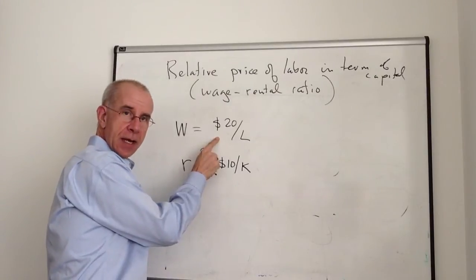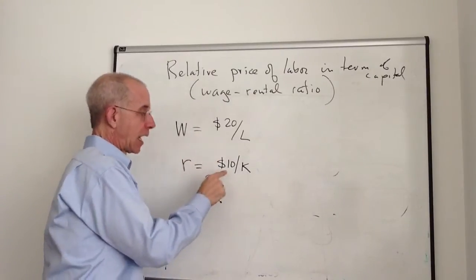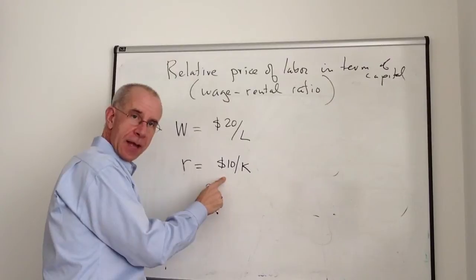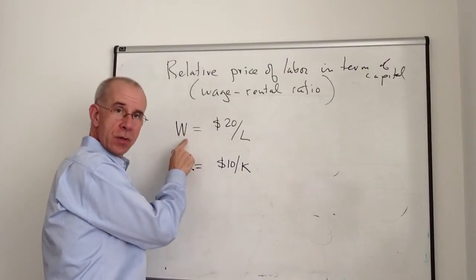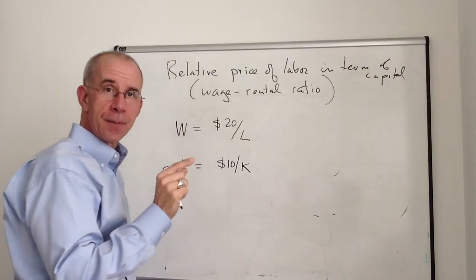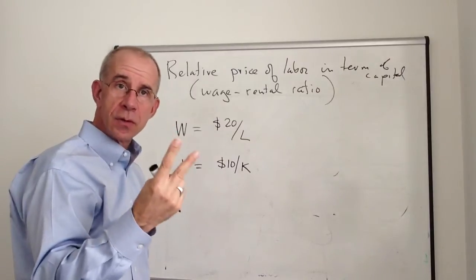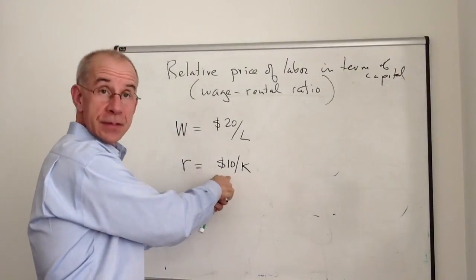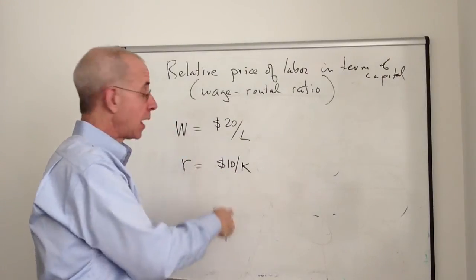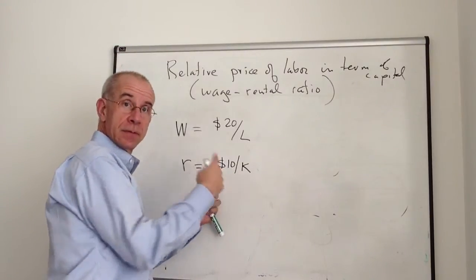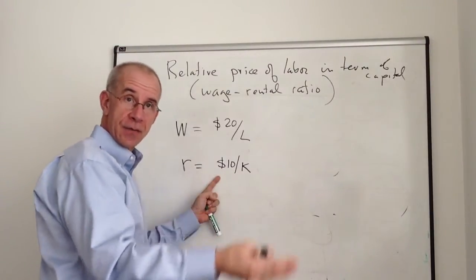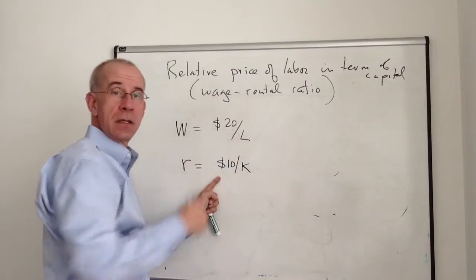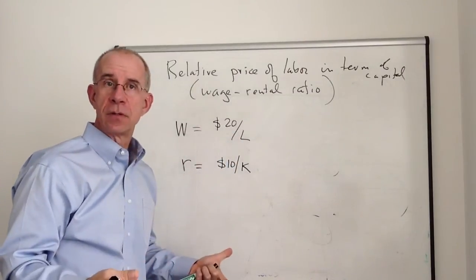If you've got $20 to hire a unit of labor and $10 to hire a unit of capital, if I hire one more unit of labor, I give up the opportunity to purchase two units of capital. It's half as expensive. If I hire one unit of capital, it takes me $10, and I give up the opportunity to hire half a unit of labor.